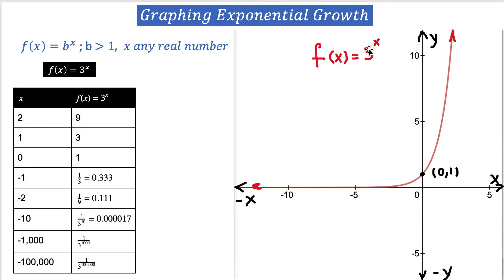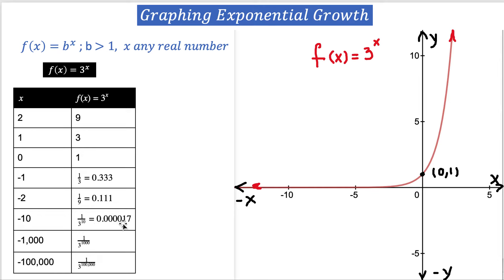For example, if x = -2, then 3^(-2) can be rewritten as 1/3², which is 1/9 ≈ 0.111. Regardless of how large the negative x is, the output is never going to be a negative number — it's always going to be positive, but smaller and smaller. For instance, if x = -10, then 3^(-10) = 1/3^10 ≈ 0.00017, which is still greater than 0.